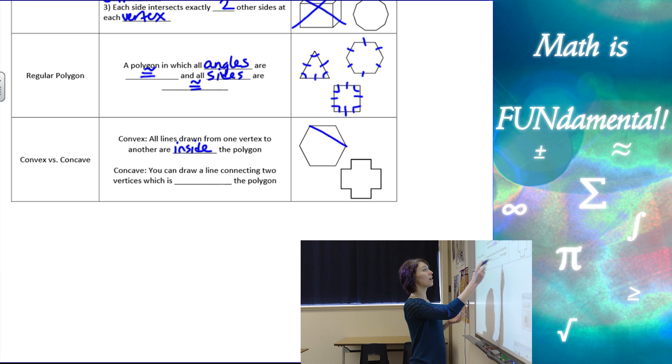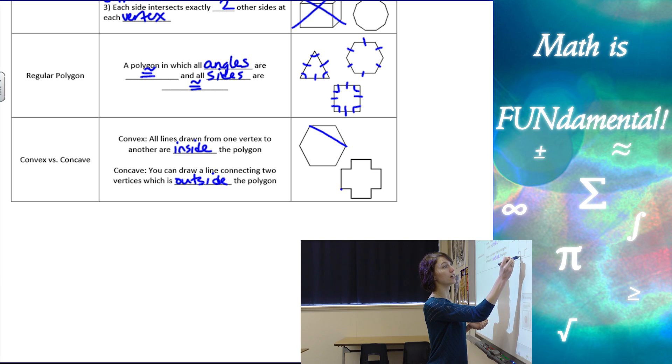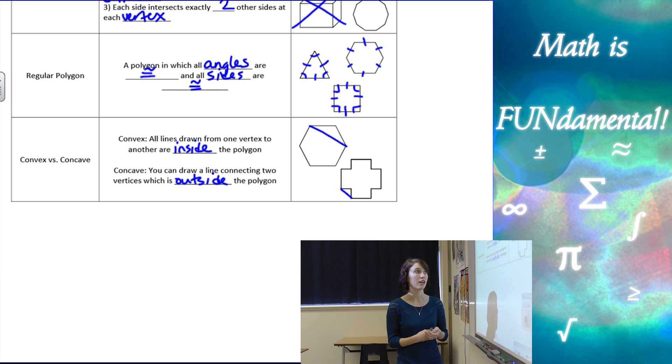Concave: we can draw a line connecting two vertices which is outside the polygon. For example, here I can connect those two vertices, but that line is not inside our polygon. Another way to think about concave is that if any vertices cave in instead of bending out, that's going to be a concave polygon.